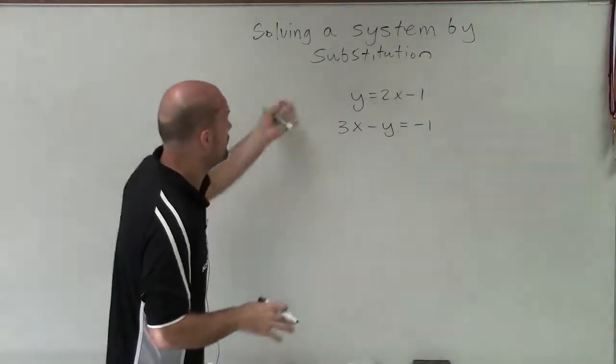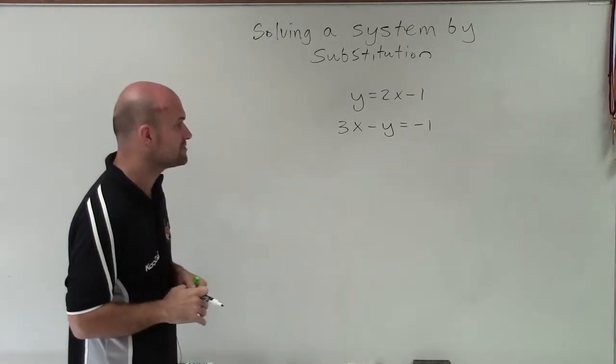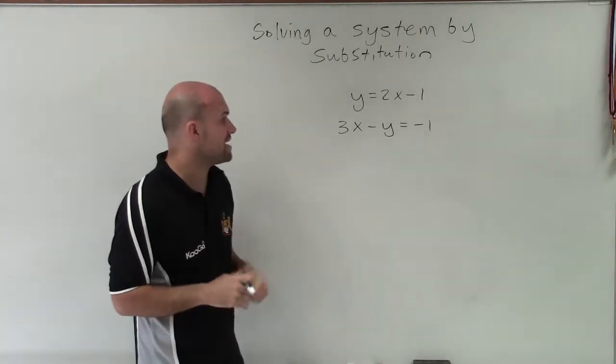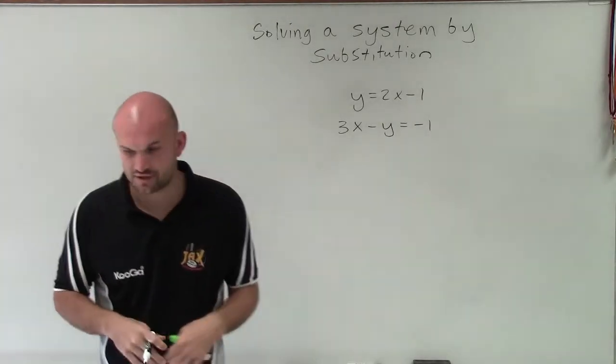Welcome. So here we go. What I have here is y equals 2x minus 1, and then I have 3x minus y equals negative 1.